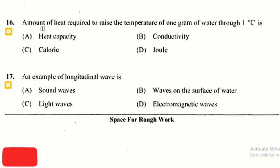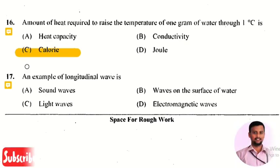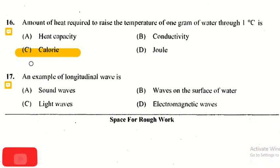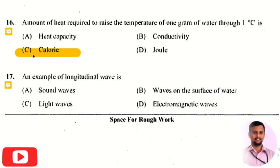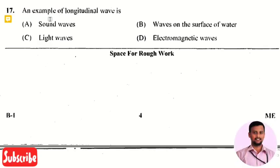The next question: the amount of heat required to raise the temperature of 1 gram of water through 1°C is? The right answer is option 3, calorie. A calorie is defined as the amount of heat required to raise the temperature of 1 gram of water through 1 degree Celsius.